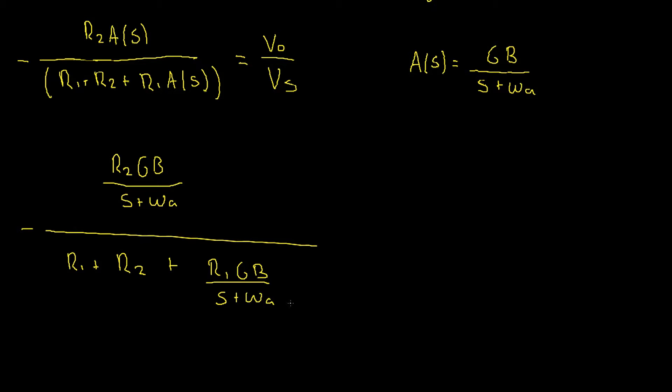Now this looks a little bit messy. From here there's a couple of ways you could tackle this, but the best way I find is simply to multiply through by s plus omega_a. As always, I don't like denominators, so let's get rid of them now. Remember, as we're doing this top and bottom, there's no change to the equation, which gives us negative r2 gb, the s plus omega_a is gone, and we're left with s plus omega_a, all of that, multiplied by r1 plus r2, plus r1 gb.